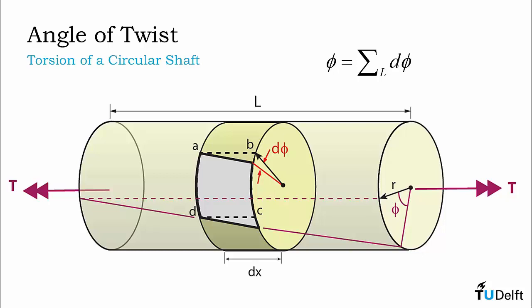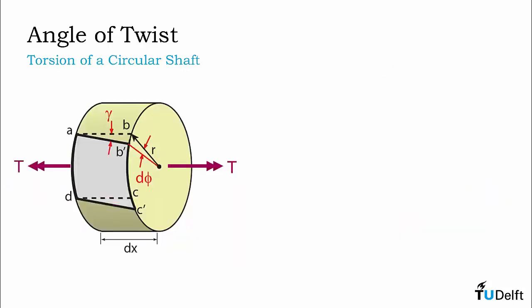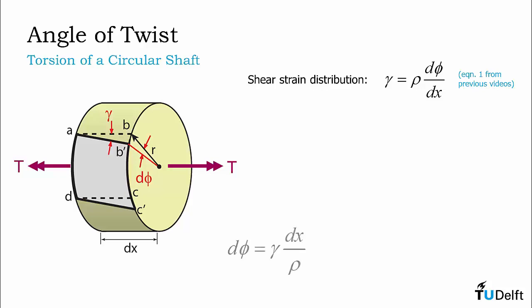If we divide the shaft into an infinite number of elements, we obtain an infinite sum or an integration of angles of twist. If we focus in on that segment of shaft with length dx, we can recall that the angle of twist associated with this segment can be related to the shear strain state. We already established that the angle of twist of this segment, d-phi over dx, is the rate of change of the shear strain with respect to the radial position within the shaft cross-section — it is the slope of the linear shear stress distribution. We can rearrange this equation in terms of d-phi as shown below.